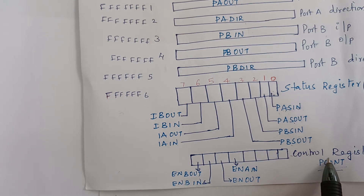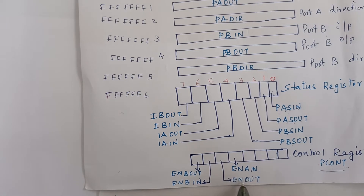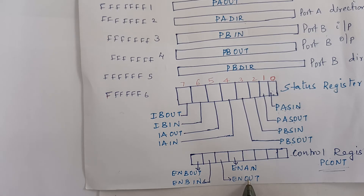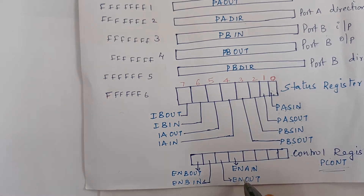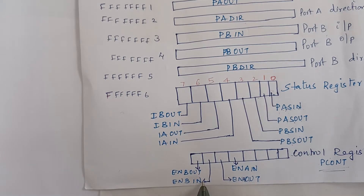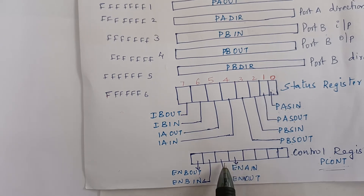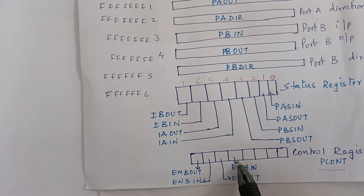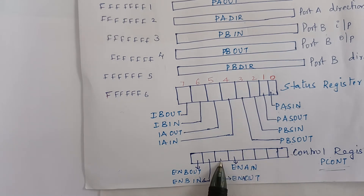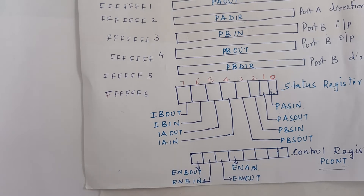The enable bit is set to 1 to enable the corresponding interrupt. This enables port A input and output. Similarly, enable B in and enable B out. That is, enable A in and enable A out correspond to bits 4 and 5 of the port A control register.